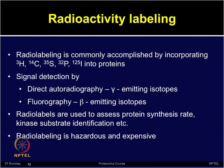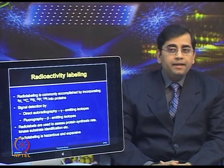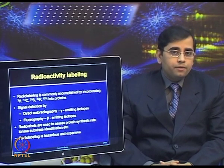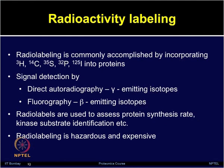In radioactivity detection, various types of radio-labeling molecules are used. The commonly used radio labels include 3H (hydrogen), 14C (carbon), 35S (sulfur), 32P (phosphorus), 125I (iodine), as well as many other radionuclides incorporated into the proteins. Signal detection can be performed by direct autoradiography, which involves gamma emission, or by fluorography, which involves beta emission. Radio labels have been used for many applications on microarrays, including kinase substrate identification, which is most commonly used.